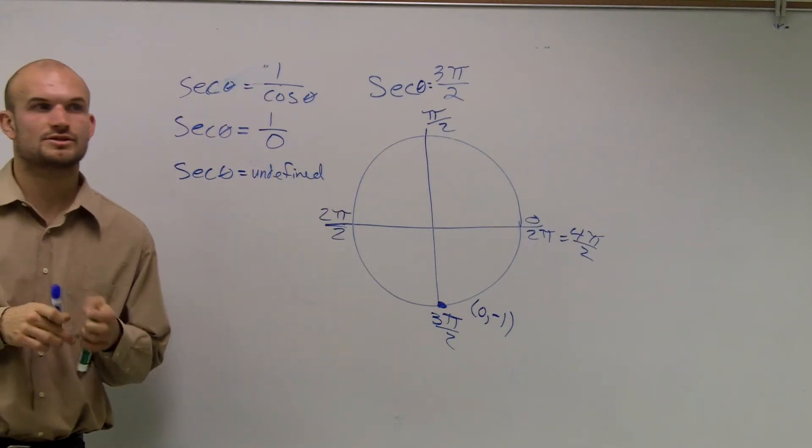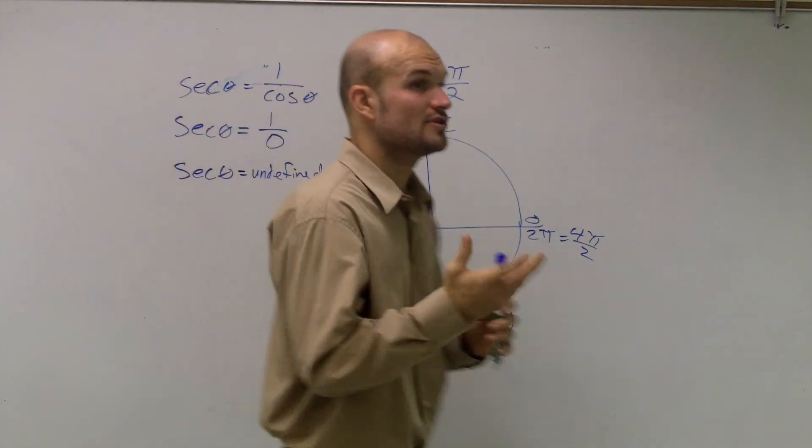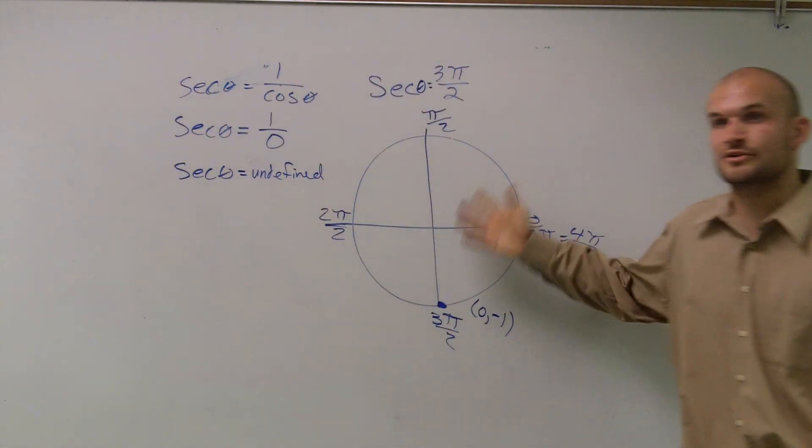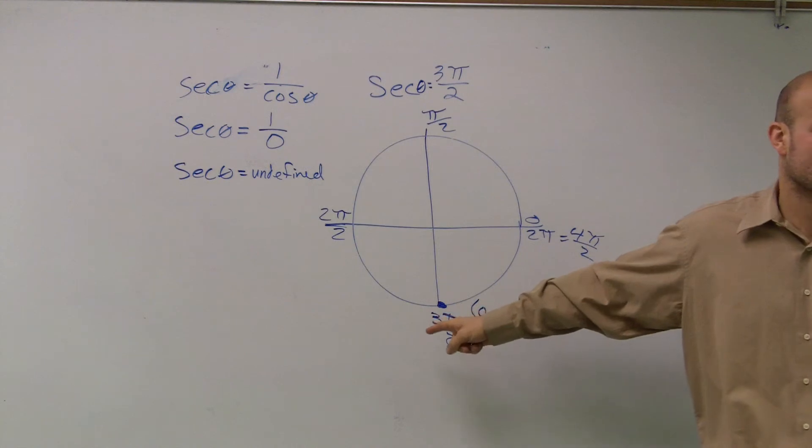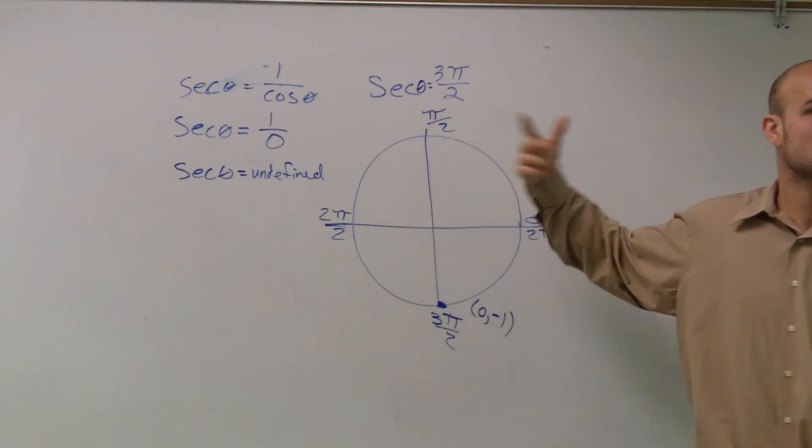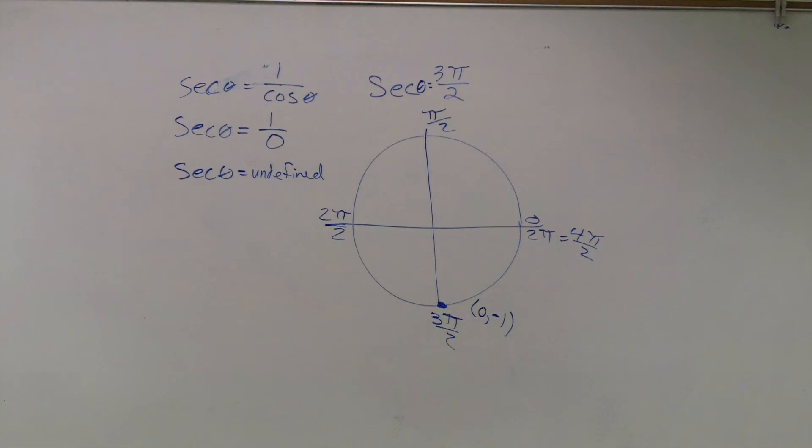Notice how this was on the unit circle, so we could easily find the point. If it's not on the unit circle, you have to draw a right triangle to find the points.